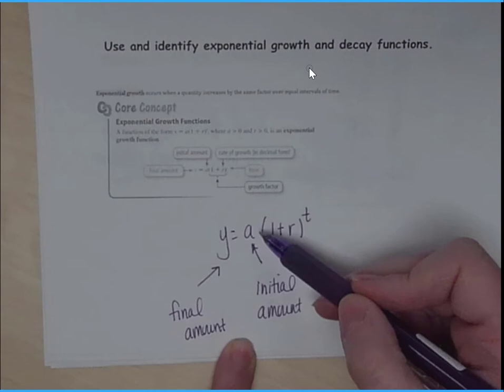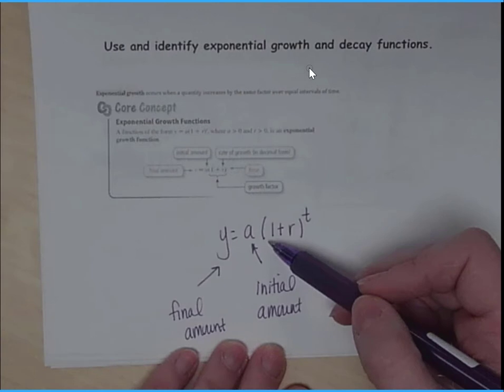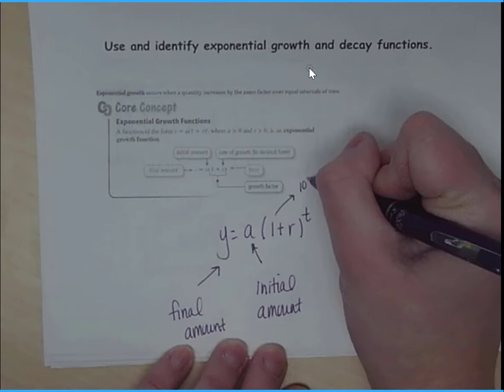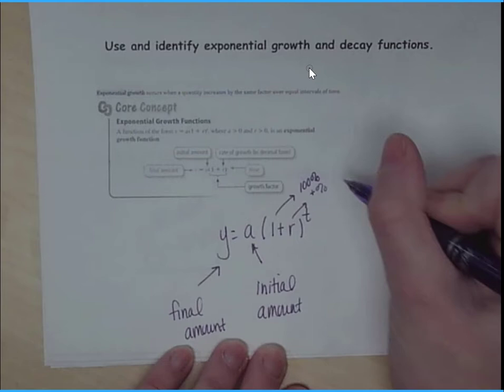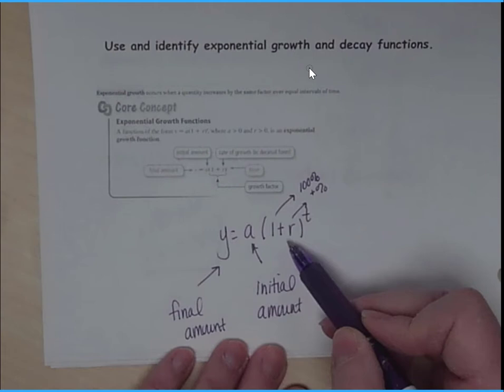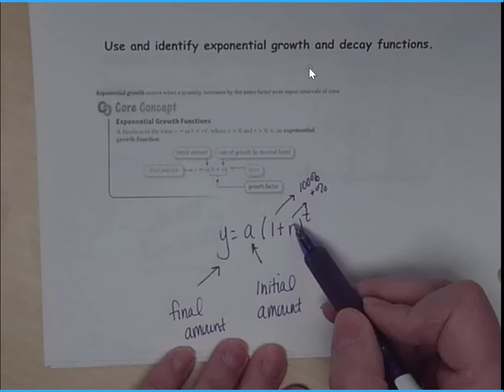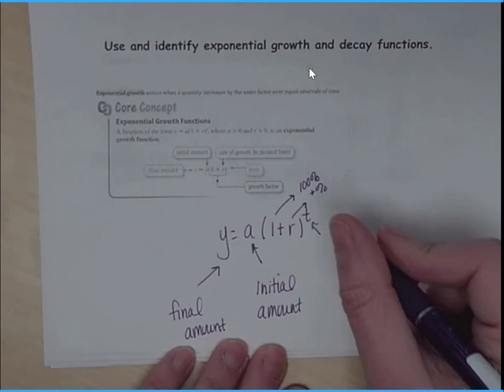So if we have a starting salary or starting amount that changes exponentially, this is what we're going to start with and this is what we're going to finish with. Now we're looking at a percentage. Remember, 1 is actually 100%, and our r is our rate, which is our percent. So if I grew at 7% each year, that would be 107% each year. So that's where the 1 and the r comes in.